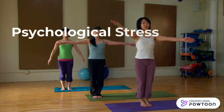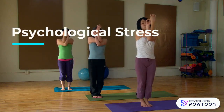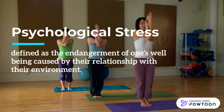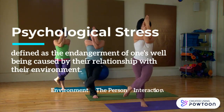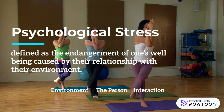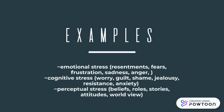First, let's talk about psychological stress, which is based off of three topics: the environment, the person themselves, and the interaction a person has with their environment. Some examples of this would be emotional stress, like fear and anger; cognitive stress, things like guilt and anxiety; and perceptual stress, like beliefs and worldview of things.